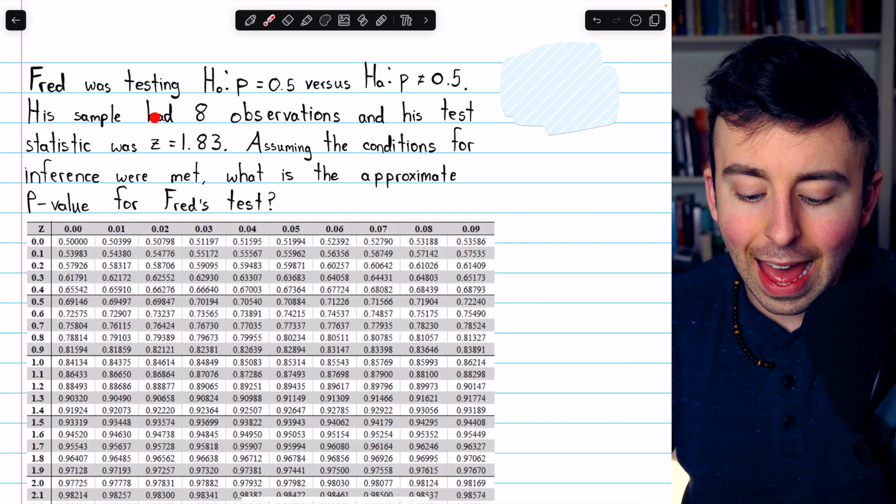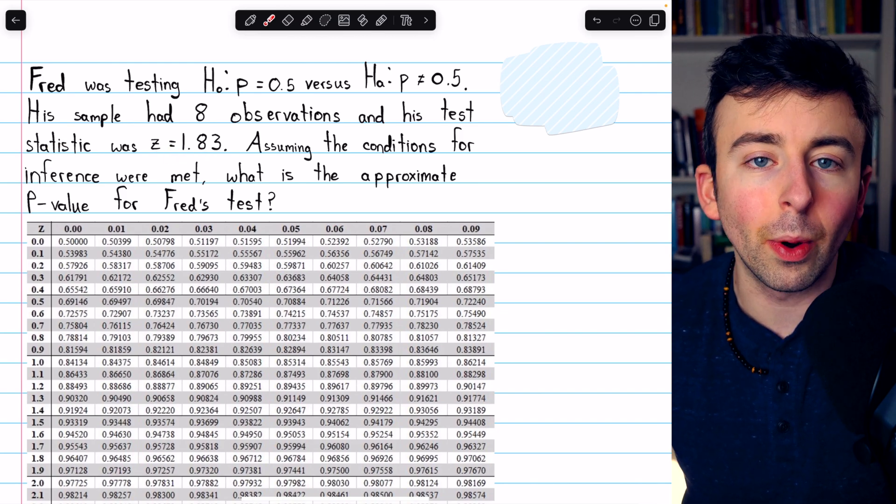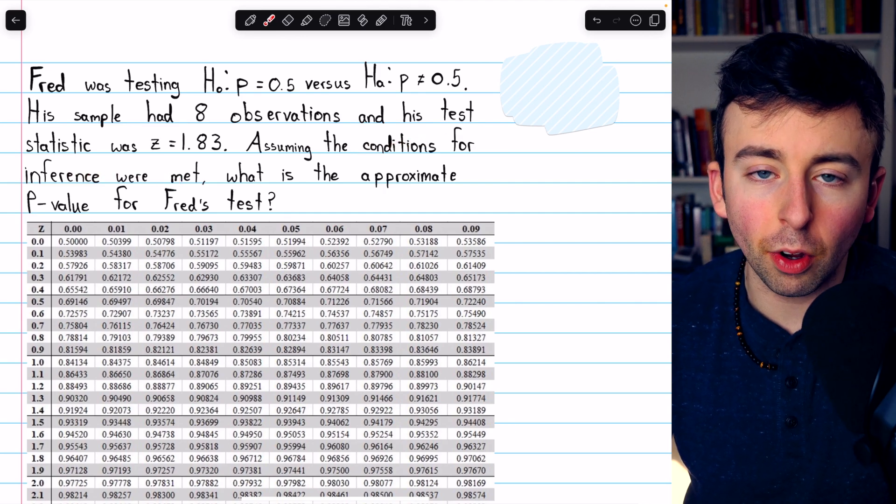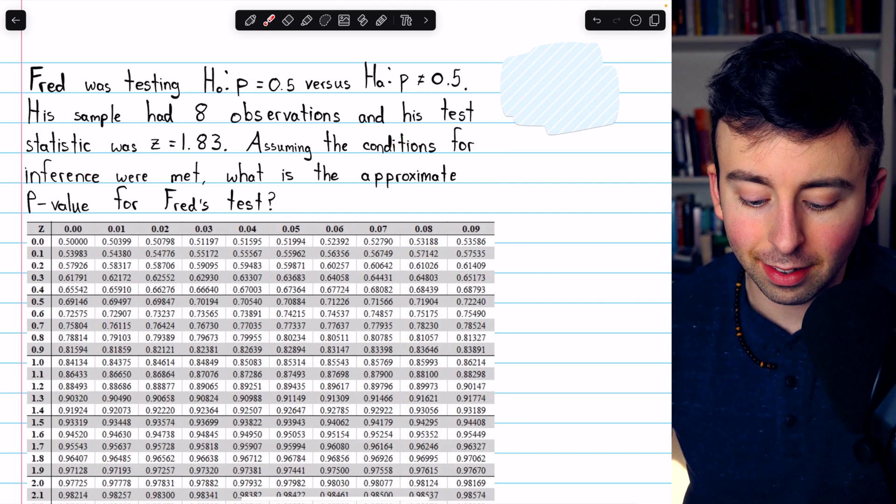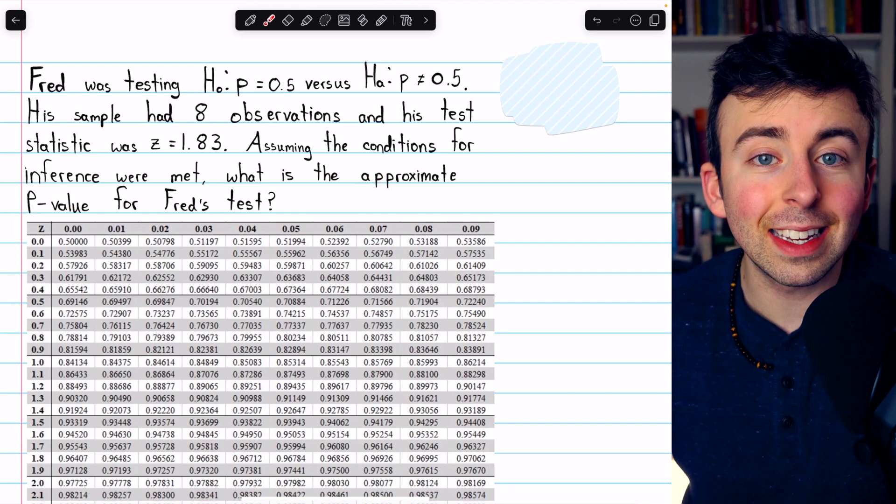His sample had 8 observations and his test statistic was z equals 1.83. Assuming the conditions for inference were met so we can proceed with a hypothesis test, what is the approximate p-value for Fred's test?